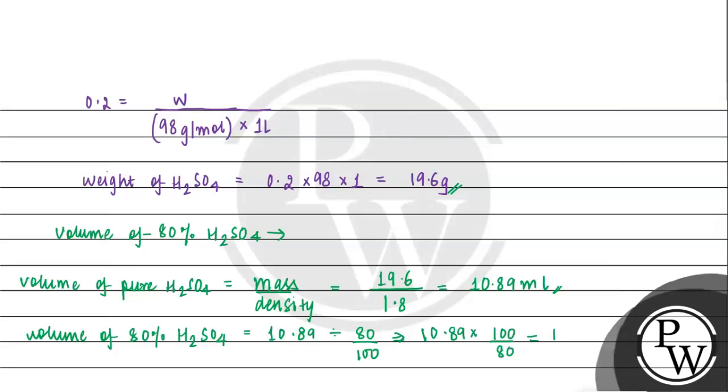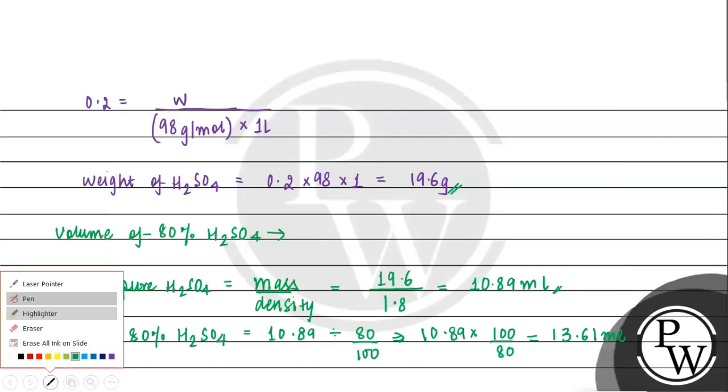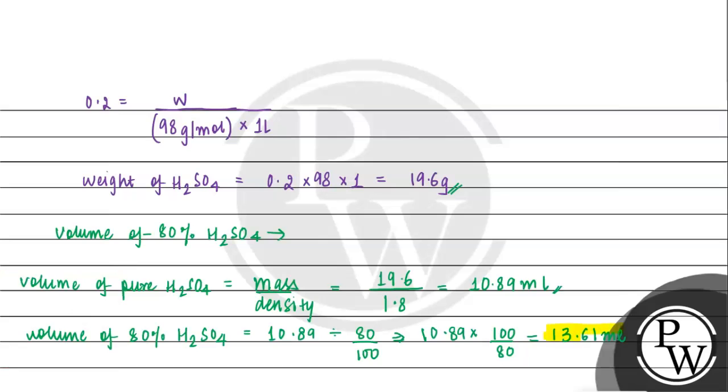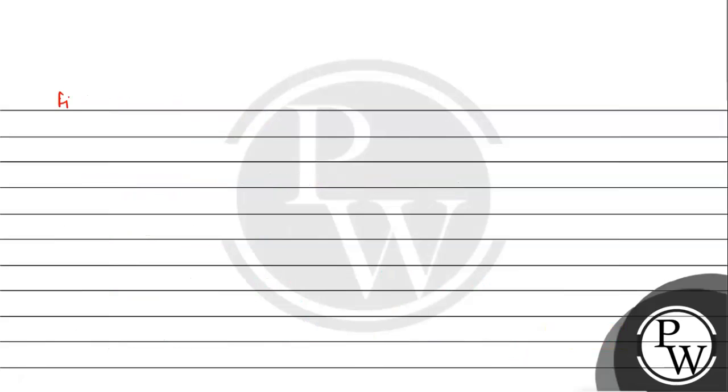Which will be 13.61 ml, so this will be the final answer to the question. Let me highlight it also, final answer to the question is volume of 80% H2SO4 is 13.61 ml. I hope you understood it well, thank you.